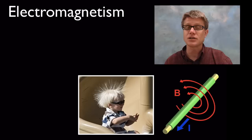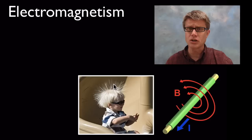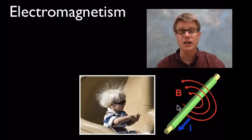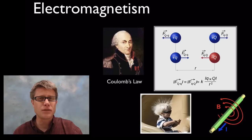Sometimes the fields are electric, like static electricity — a buildup of electrons in a child going down a slide. Their hairs repel each other because they all have a similar charge. Or when electrons move through a wire — current — there are fields that move around the outside of the wire.